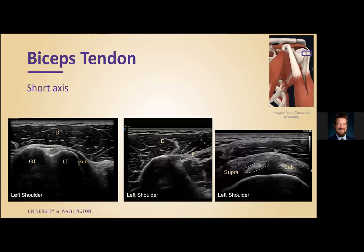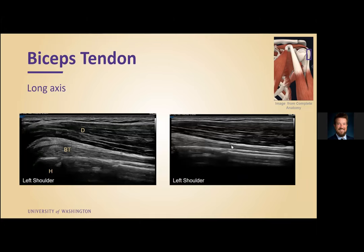We started with the biceps tendon in short axis. To the lateral side we have the greater tubercle, the lesser tubercle medially, and our biceps tendon in the groove in short axis. We have our transverse humeral ligament running over the top, deltoid above that, and subscap medially. Scanning down to the pec tendon, you can see the biceps tendon in short axis coming in just beneath it. Scanning back up to the rotator interval, you can see the biceps tendon in short axis, subscap medially, and the supraspinatus laterally.